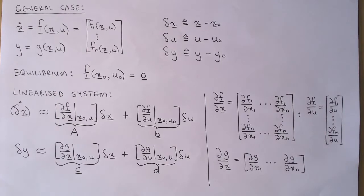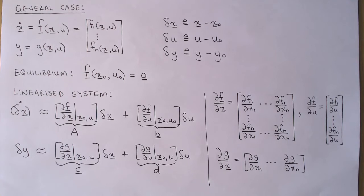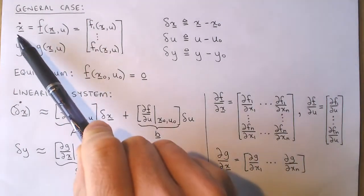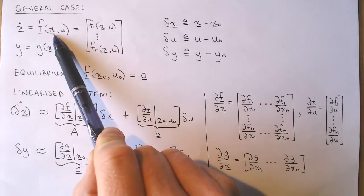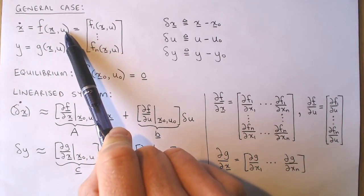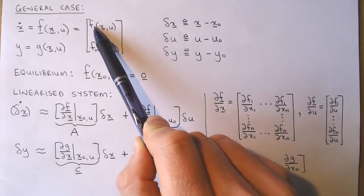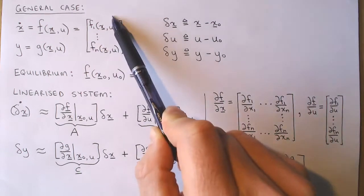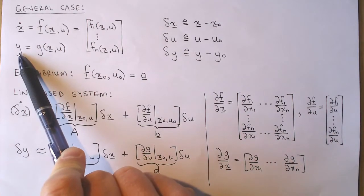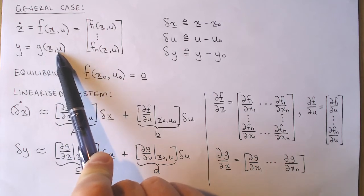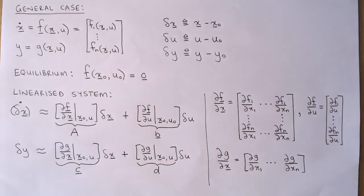In the general case where our system has an input and more than one state, we can go through the same linearization process. For this video, we won't go through the derivation — we will only look at the definitions and results. The nonlinear system is defined by the state equation, where f is a vector function in terms of the states and input. By this we mean that there are a number of scalar nonlinear functions, f1 to fn, packed into a vector. The output equation is a nonlinear function in terms of the states and the input.